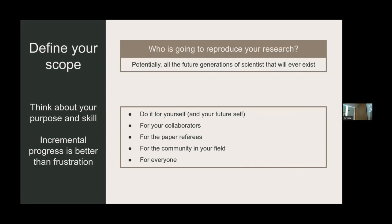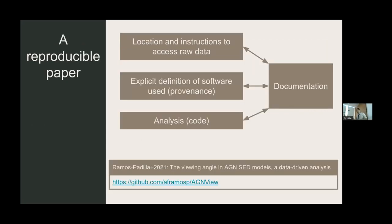These skills — working with software, reproducing things, working with workflows — are very transferable, not only for research but also for industry. You can also do it for your collaborators, for paper referees who may ask for more details, and for the broader community. But you need to define your scope.